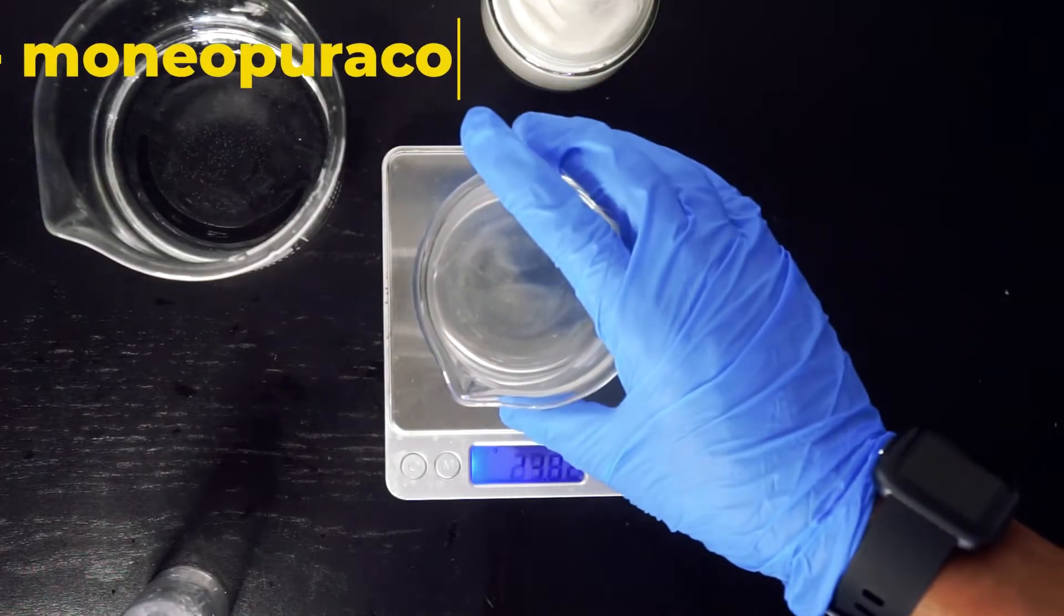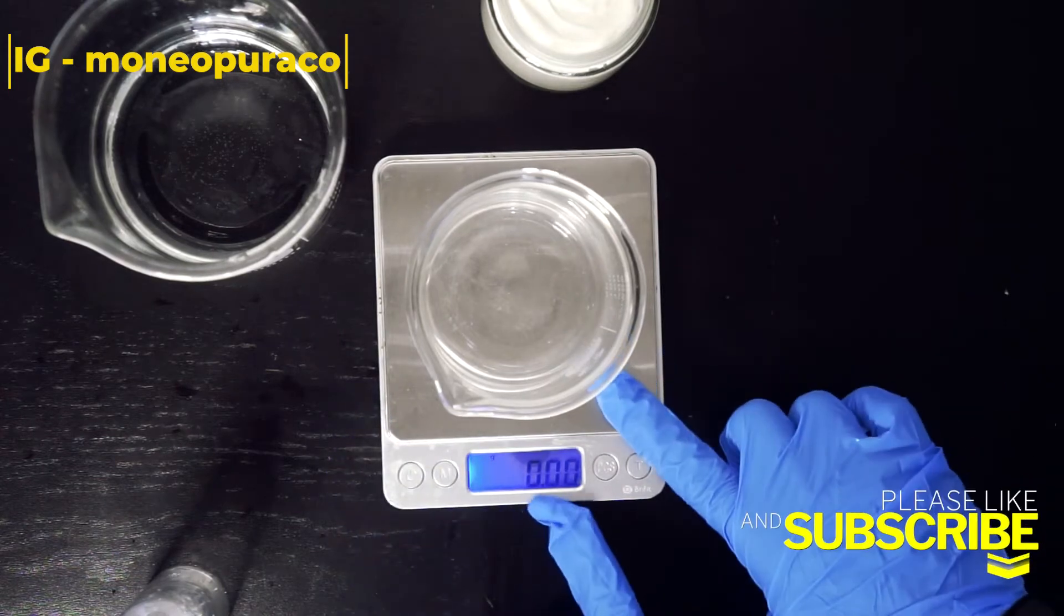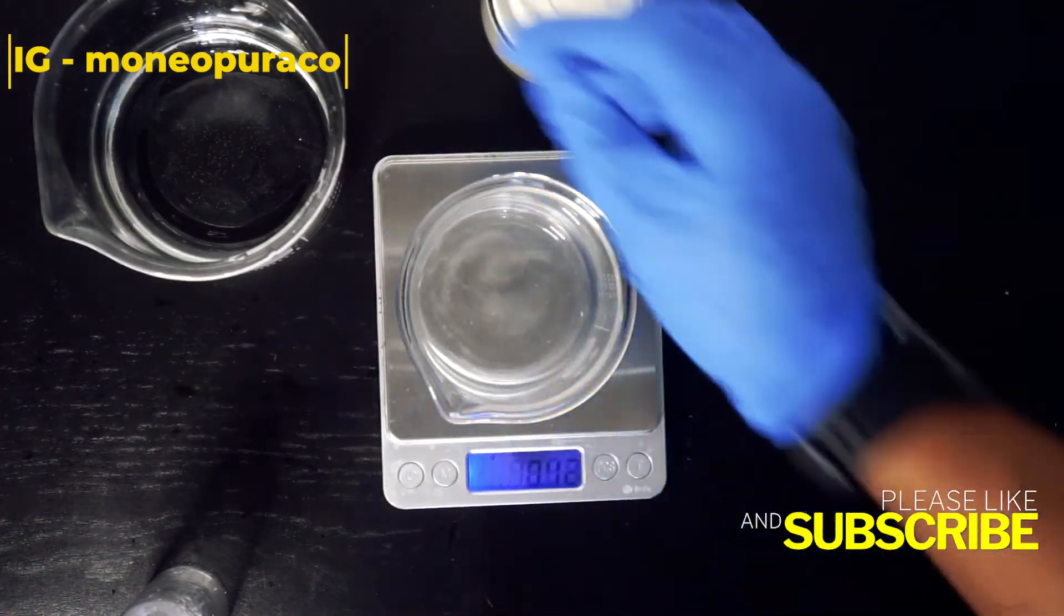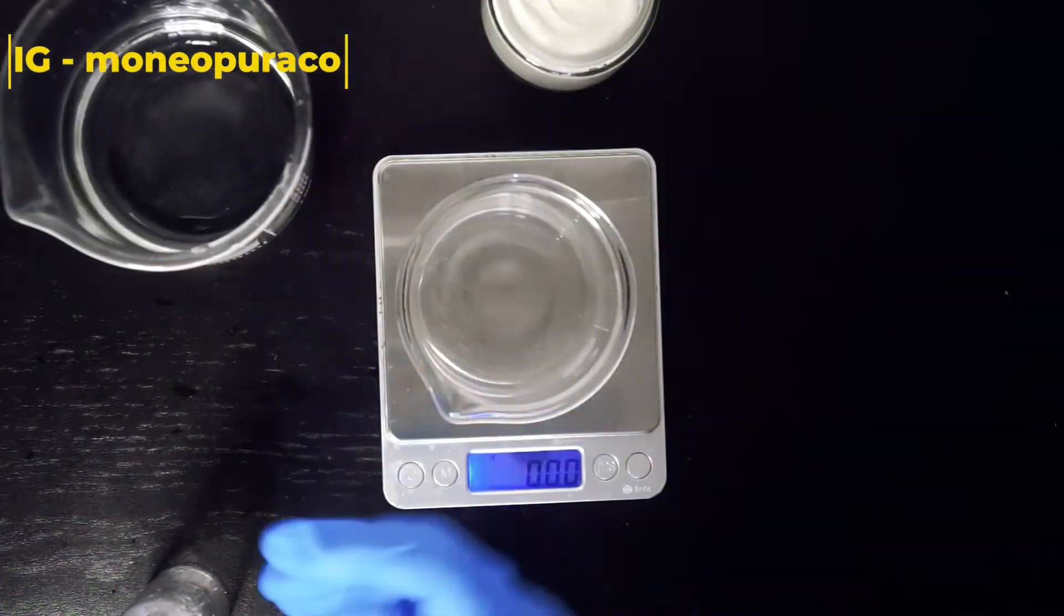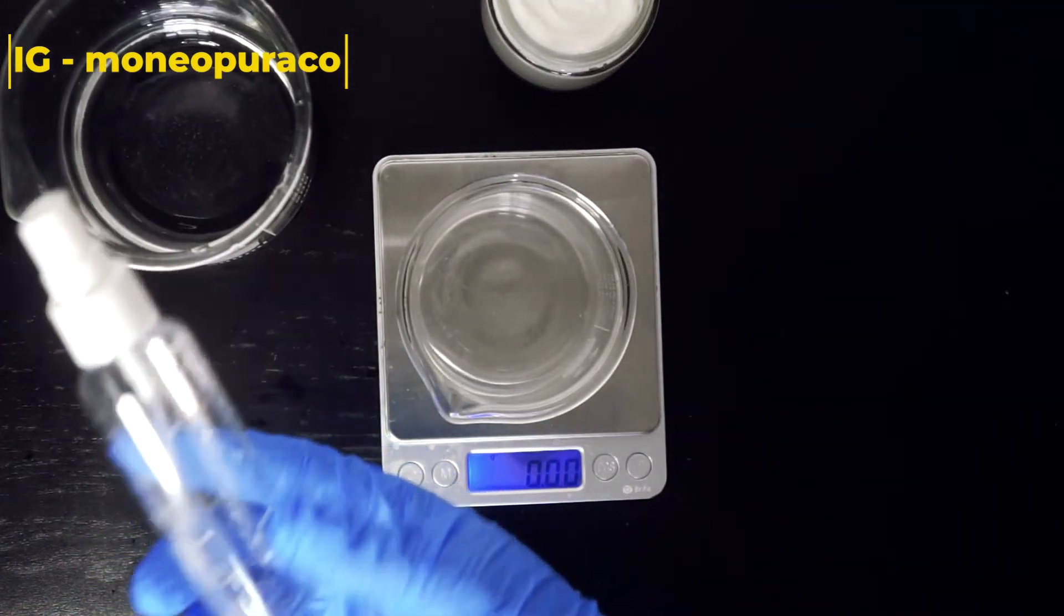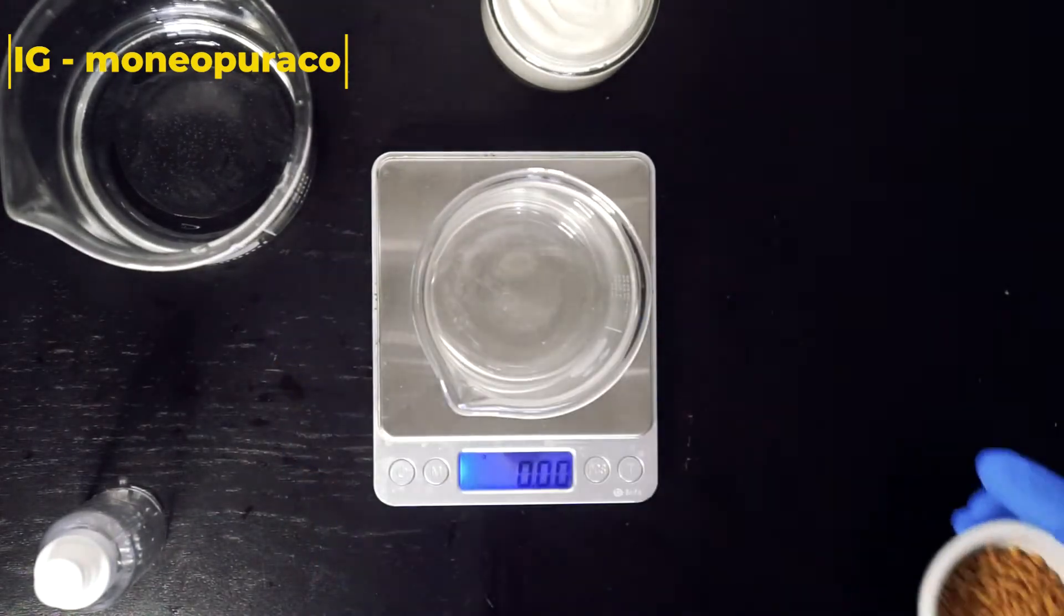Okay, so to make our fenugreek hair spray you're going to need a digital scale, a container to measure out our ingredients in, distilled water, a spray bottle to store your hair spray, and also your fenugreek seeds. If you're ready, let's go ahead and measure out our ingredients.